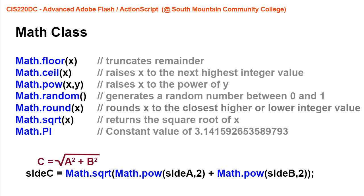We saw the math.floor method earlier. Math is the class, floor is a method of the Math class, and we refer to it in code as math.floor — then inside parentheses would be the container or variable that we want to have this operation performed on. The floor method simply takes the highest integer below the value of x.